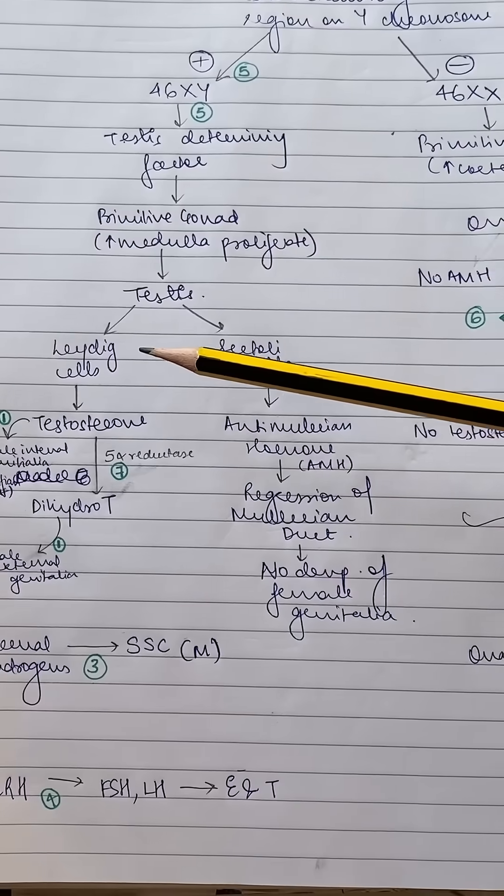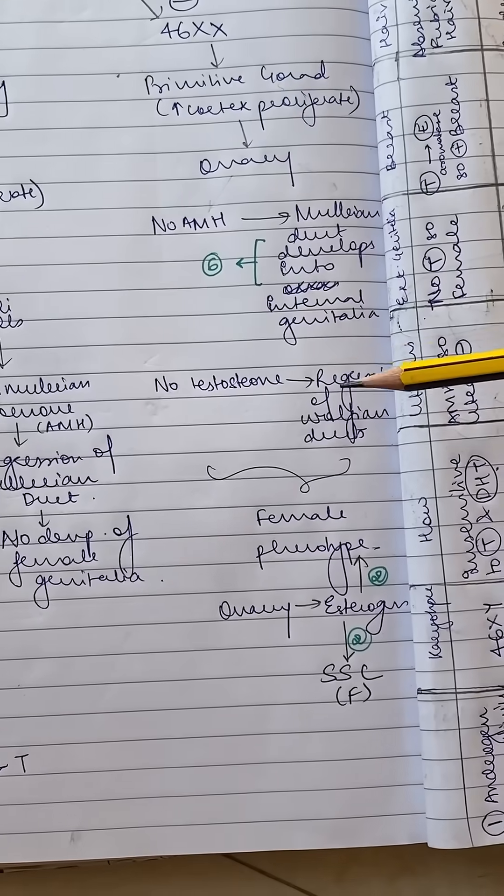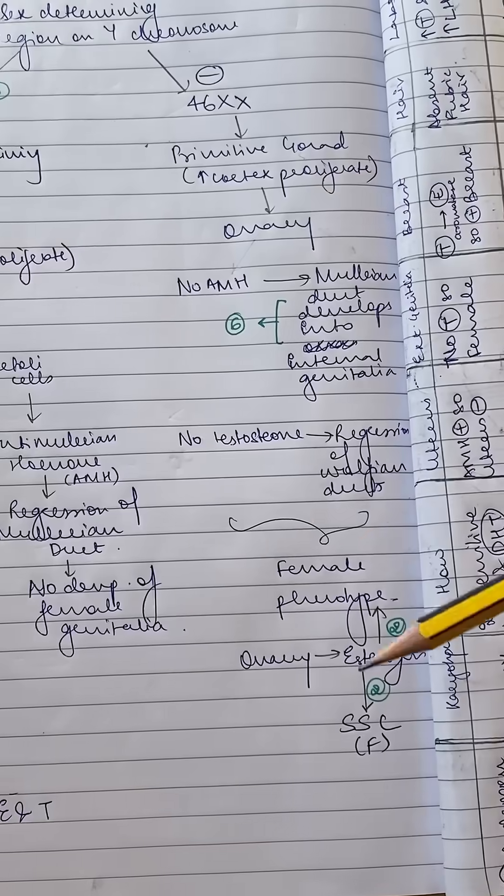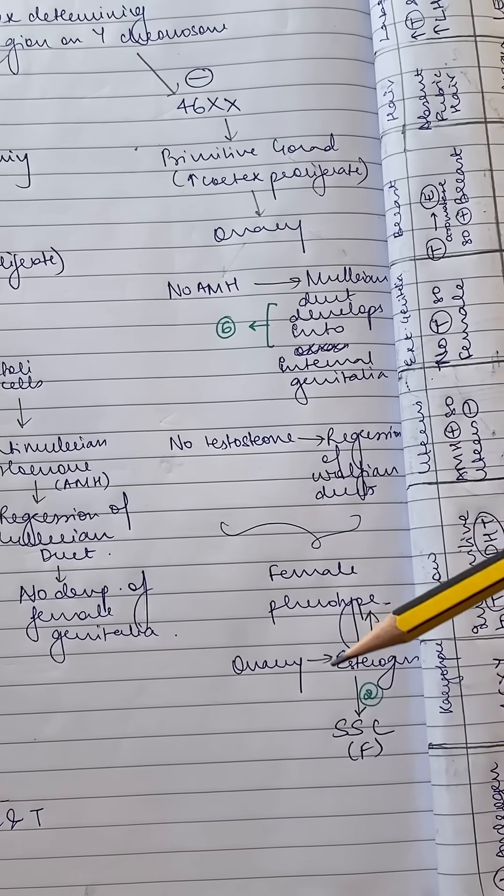And since there are no Leydig cells, there is no testosterone and there is regression of Wolffian ducts, so the male internal genitalia are not developed. So in total, this person develops a female phenotype.